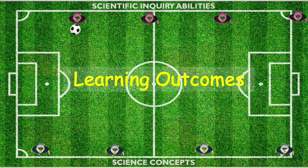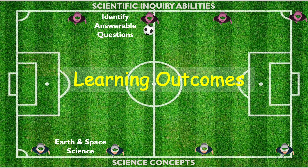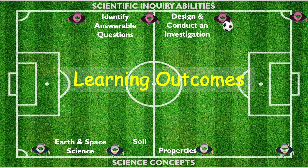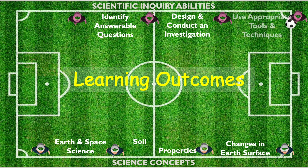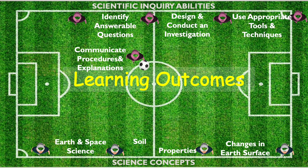This activity aims to impart students with key science concepts and scientific inquiry abilities, such as Earth and science concepts, identifying research questions, learning soil properties and their characteristics, designing and conducting investigations and experiments, learning changes in the Earth's surface and how the local environment influences these changes, using appropriate tools and techniques for classifying and analyzing data, and communicating procedures and explanations. All these skills are relevant to building students' research abilities.